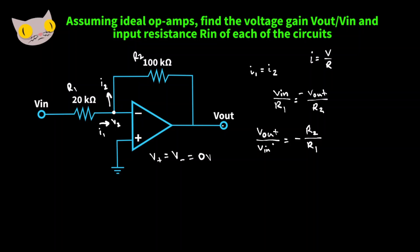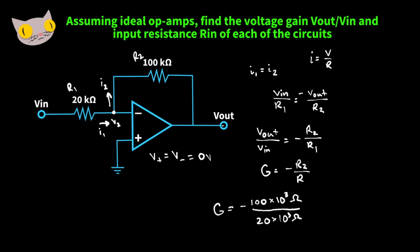Vout over V_in is our voltage gain, so gain equals negative R2 over R1. Filling in our values: gain equals negative 100×10³ ohms over 20×10³ ohms, giving us a voltage gain of negative 5.